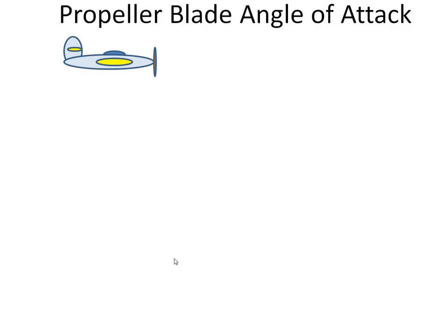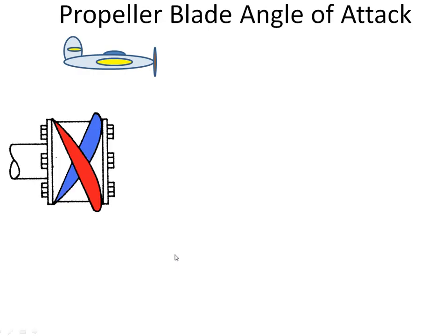This screencast will try to explain what happens with asymmetric loading on a propeller blade. Here we have an aircraft flying straight in level and here's the propeller hub.